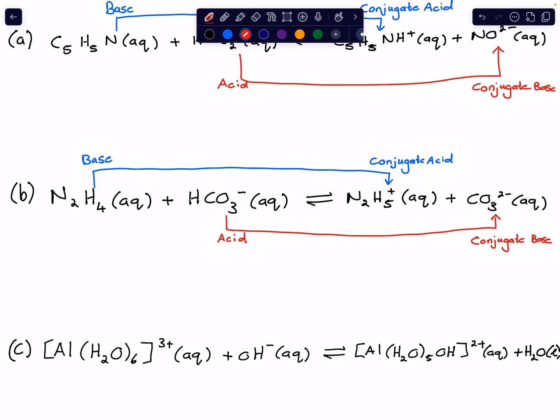Conjugate pairs always go in pairs — an acid linked with its conjugate base, or a base linked with its conjugate acid. It's always acid with conjugate base, or base with conjugate acid. The conjugate pairs differ by one proton. Notice how bicarbonate HCO₃⁻ differs from the carbonate anion CO₃²⁻ by exactly one proton. By definition, Bronsted-Lowry conjugate pairs differ by one proton.